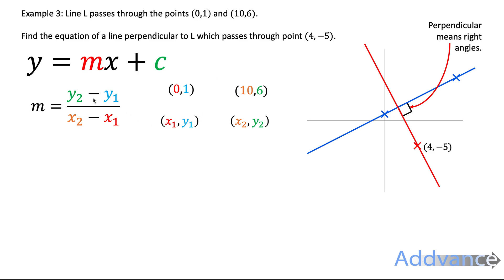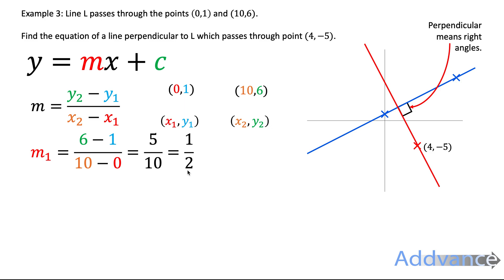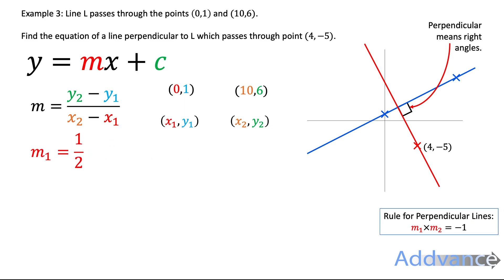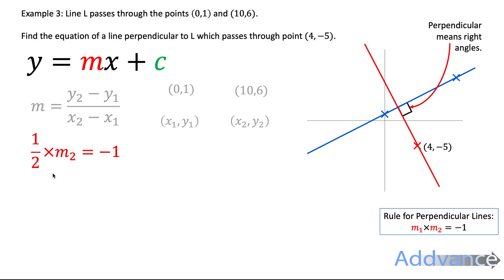The gradient of the blue line: 6 minus 1 over 10 minus 0 equals 5 tenths, which is 1 half. Using the perpendicular rule m1 times m2 equals minus 1, we get one half times m2 equals minus 1. To find m2, multiply both sides by 2, giving m2 equals minus 2. The gradient of the red perpendicular line is minus 2.